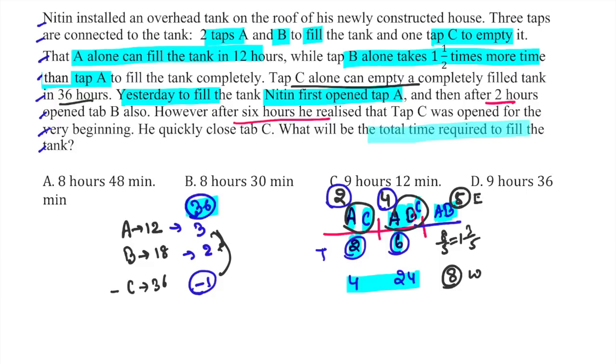We need to find the total time required to fill the tank. So we have 2 plus 6 plus 1 and 3/5, which is 9 and 3/5 hours. 3/5 multiplied by 60 is 36 minutes. The answer is 9 hours 36 minutes, that means option D.